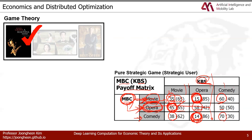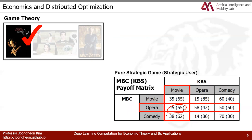Similarly, KBS has three options. Playing movie guarantees at least 55%; playing opera guarantees at least 42%; playing comedy guarantees at least 30%. The maximum of these is 55%, so KBS's optimal solution is to play movie. Therefore, NBC plays opera and KBS plays movie — this point is the Nash equilibrium for both players.